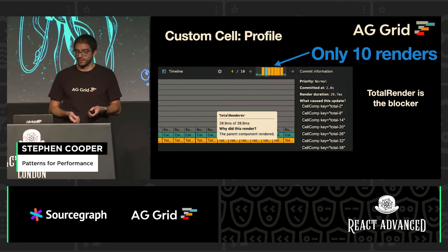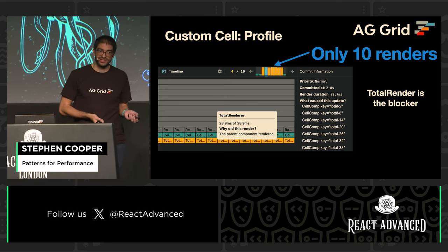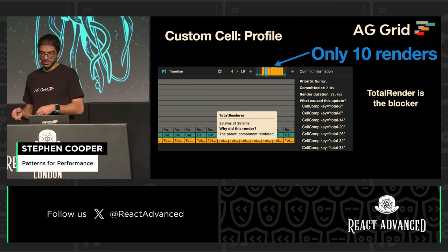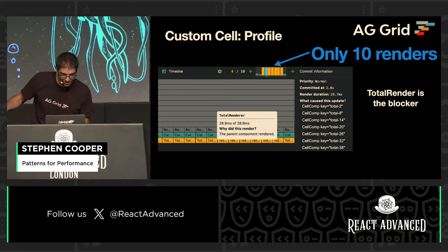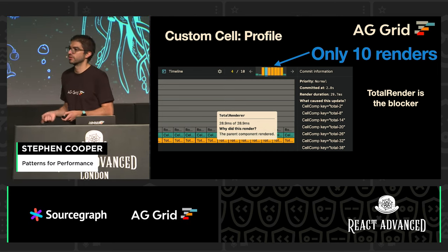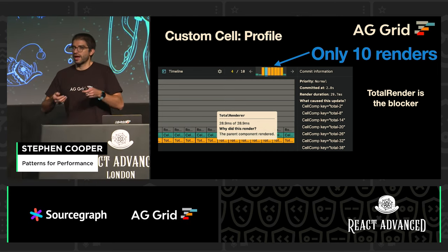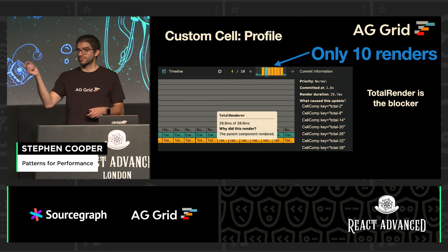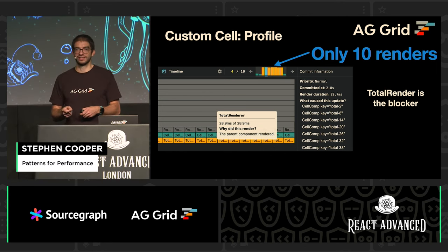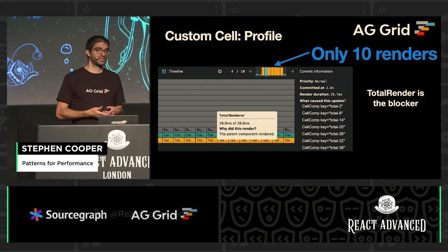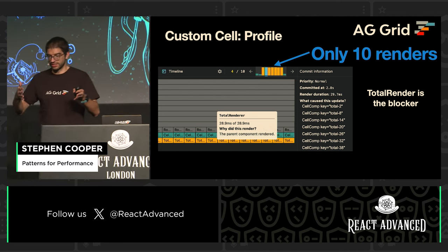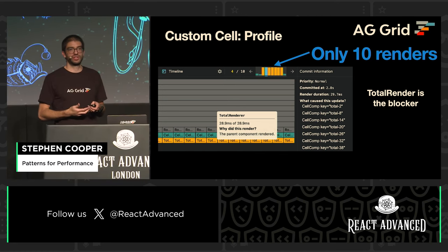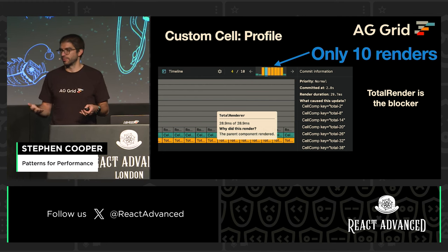We do the same profiling. Now we've got fewer renders, but each of these renders, instead of being less than a millisecond, are now 28.9 milliseconds to render that total renderer. Each one of these is now blocking the main thread. So React, in this same time period where we're pulling the icon to resize, is only able to render it 10 times. That's what's giving us this jump-jump-jump, because the browser isn't able to repaint enough times to keep up.